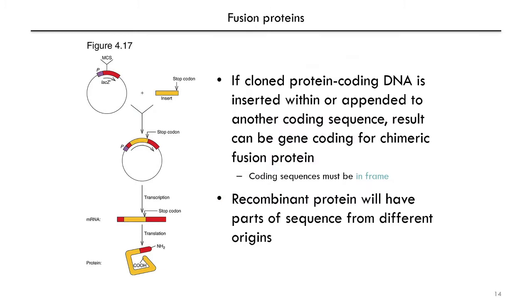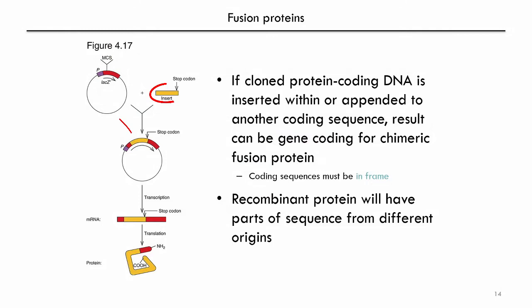For fusion proteins, if you insert your cloned protein-coding DNA so that it is appended next to another coding sequence, the result can be a gene that codes for a chimeric fusion protein. That's illustrated here in this example. You have an expression/cloning vector that encodes a subunit of the galactosidase lacZ, and you insert the coding sequence of your gene of interest into this. If you've cloned it downstream of the start codon of the lacZ subunit, you end up with a sequence that codes for the first bit of lacZ, and then it codes for the protein encoded on the gene that you cloned. This chimeric protein is translated until it reaches the stop codon that was part of your insert.